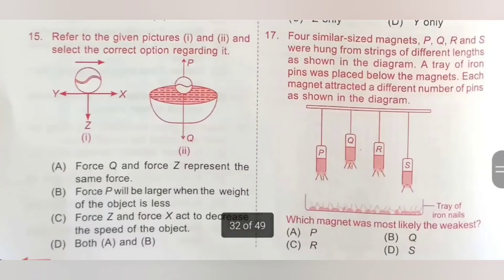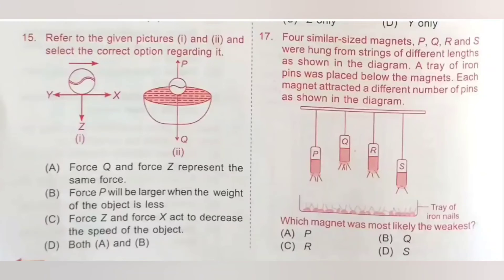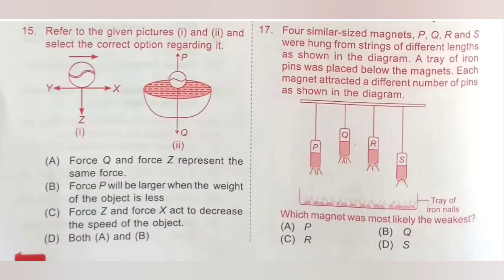Question 15: Refer to the given pictures 1 and 2 and select the correct option. In picture 1, X is frictional force, Y is pushing force, and Z is gravitational force acting on the ball. In picture 2, P is buoyant force and Q is gravitational force. Force Q and force Z both represent the same force — gravitational force. Option A is the correct answer.